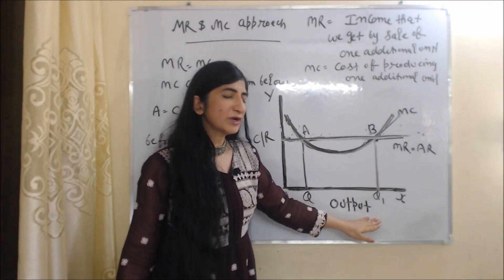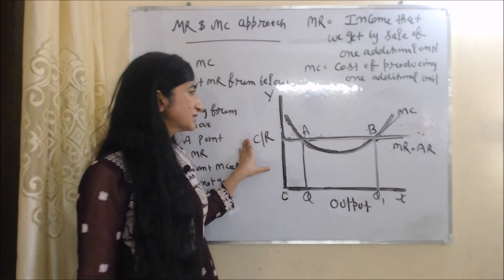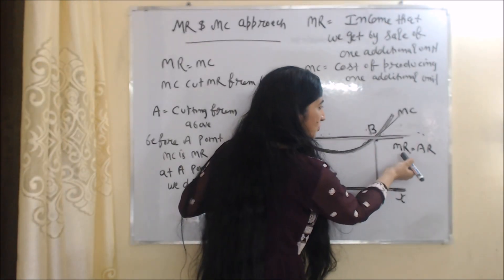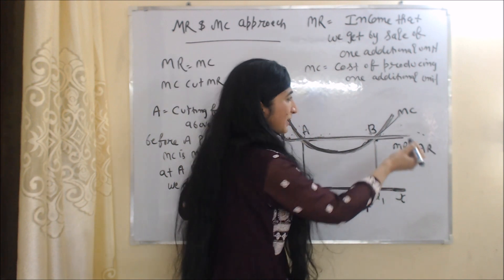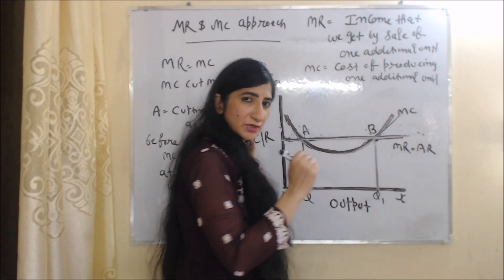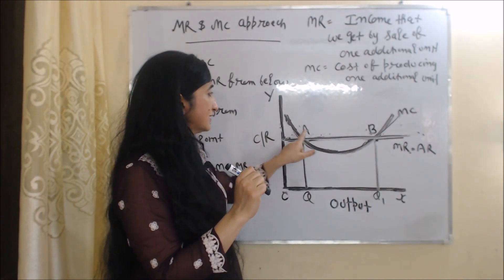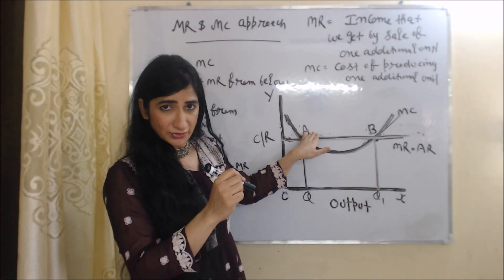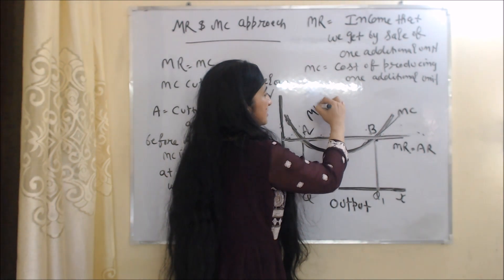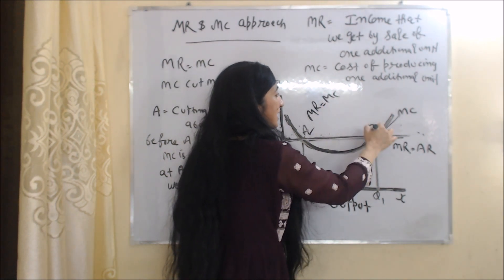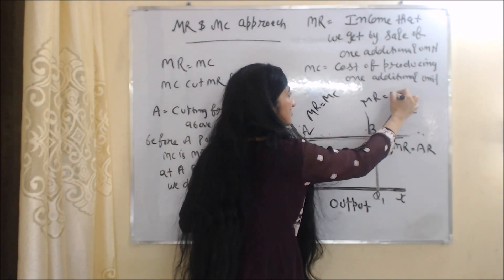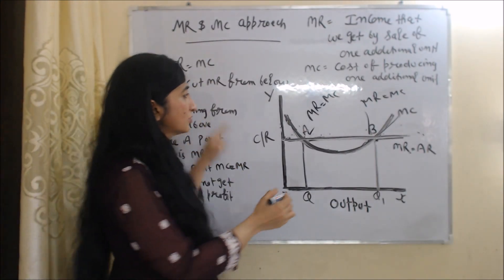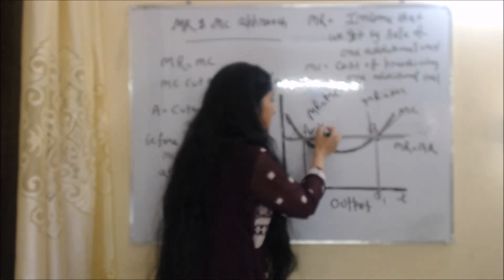We can clearly understand these conditions with the help of this diagram. On the X axis we have output, and on the Y axis we have cost and revenue. The horizontal line shows MR and AR of the firm, and the MC curve shows marginal cost of the firm. At point A and at point B, marginal revenue is equal to marginal cost — so the first condition is satisfied at both points.